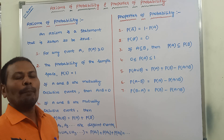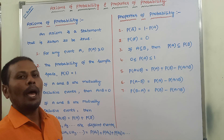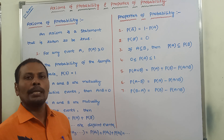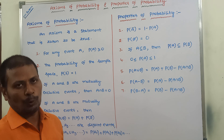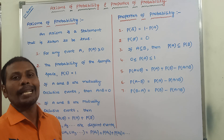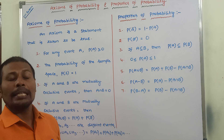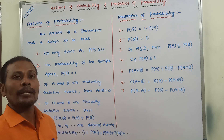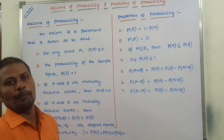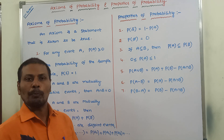Hi friends, welcome back to our YouTube channel. Today we have to discuss about axioms of probability and properties of probability in the probability and statistics course. First of all, we have to know about what is an axiom in probability. An axiom is a statement that can be considered as true. An axiom is also called a postulate. Now we can go for what are the axioms of probability.